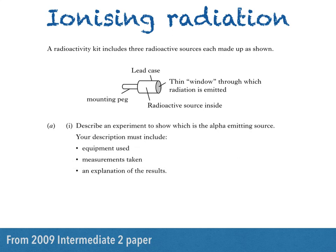Part 1 asks us to describe an experiment to show which is the alpha-emitting source. Your description must include equipment used, measurements taken, and an explanation of the results.